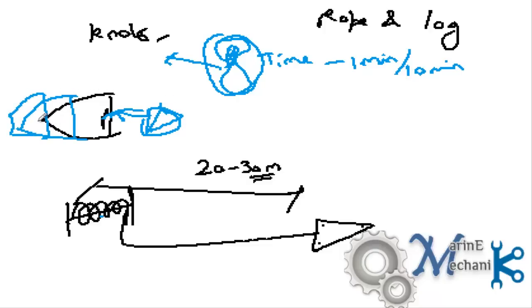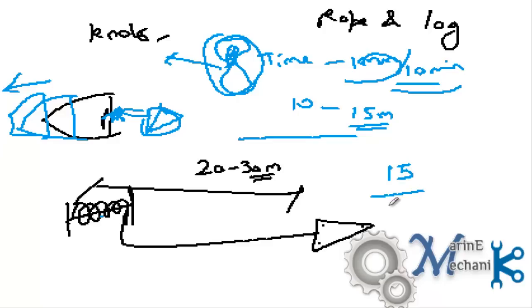As the ship proceeded forward, after the time, let's say 1 minute or 10 minutes, they calculated how much rope had been uncoiled. For 10 minutes, let's say we had 15 meters of rope uncoiled, then the distance is 15 divided by 10 minutes. This gave them the speed of the ship.